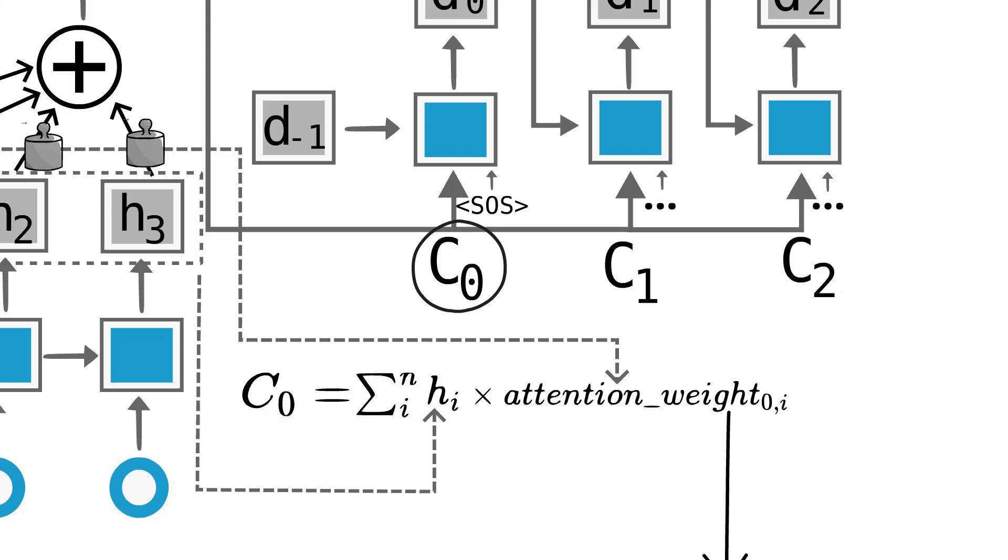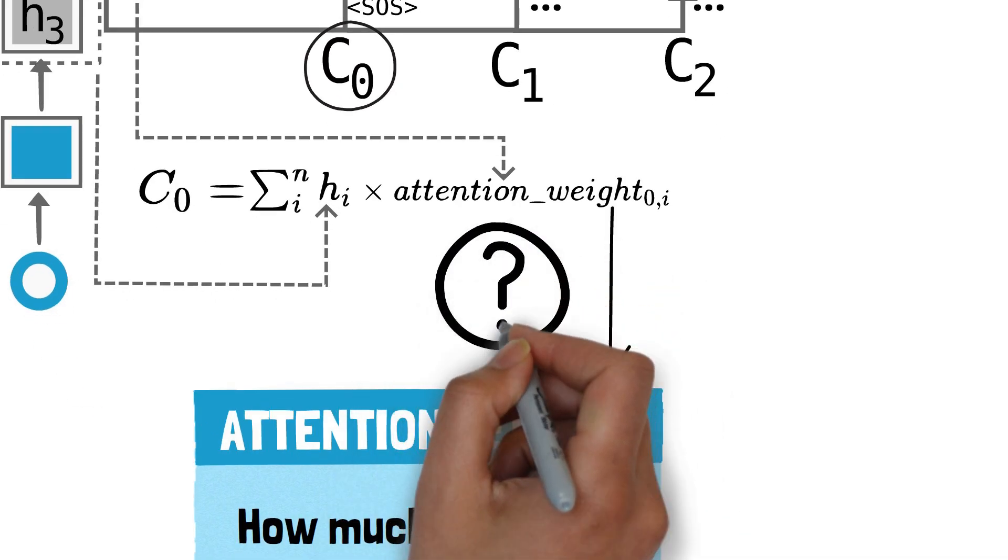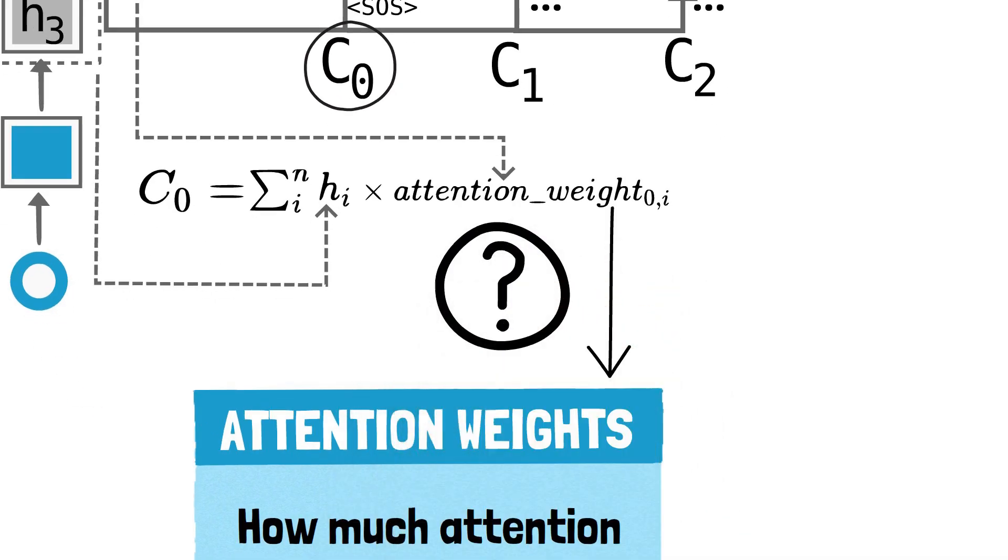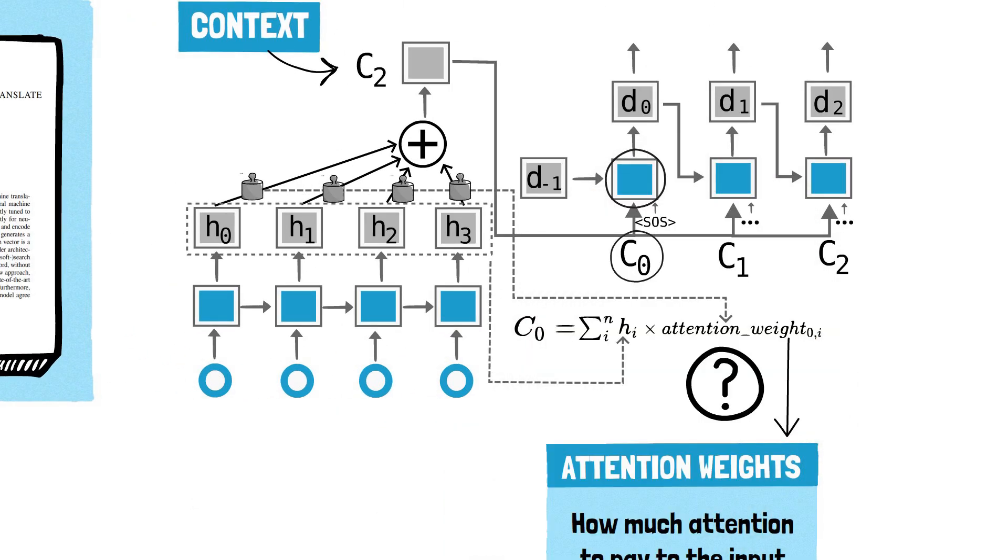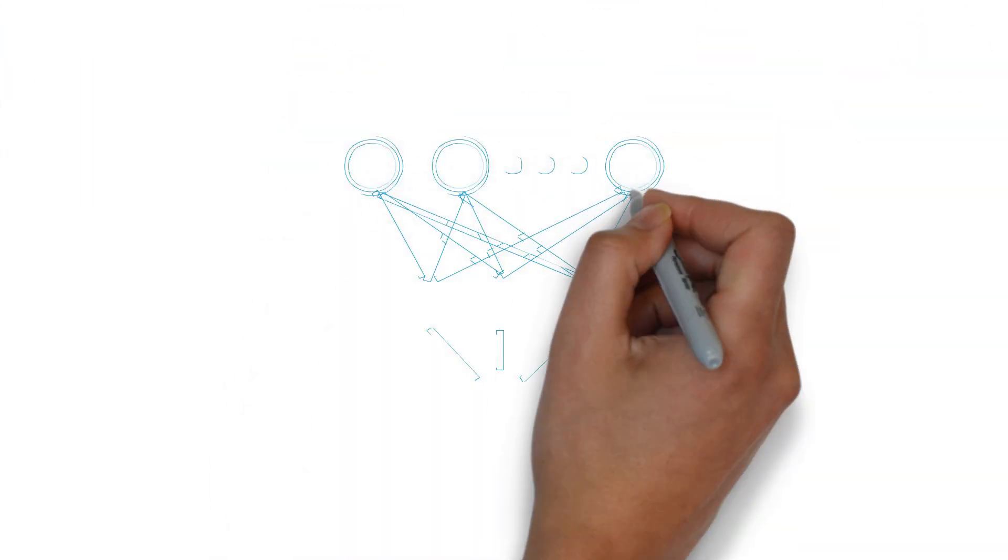So the problem is how can we calculate these weights? Let's consider a very simple implementation. For each word that the decoder is currently translating, we can implement an attention mechanism that uses a simple multi-layer perceptron.